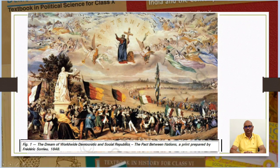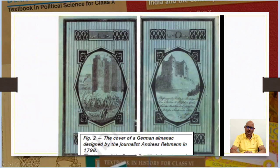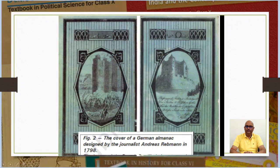Figure 1: its name is 'The Dream of the Worldwide Democratic and Social Republics.' It is one of four prints made by Frederick Soria and is already described in the first video. Figure 2 is the cover of a German almanac designed by journalist Andries Rudman in 1798. The image of the French Bastille stormed by the revolutionary crowd has been replaced by a similar fortress representing the bastion of despotic rule in the German province of Kassel, accompanied by the slogan 'The people must seize their own freedom.'